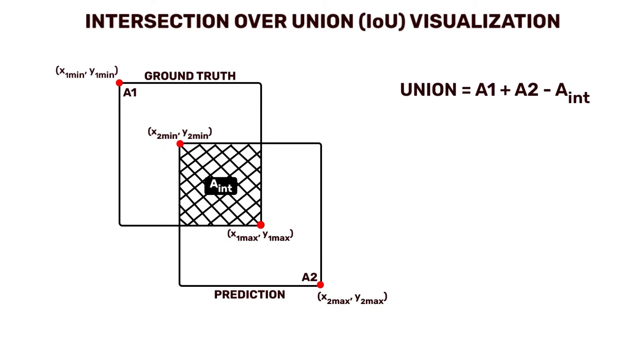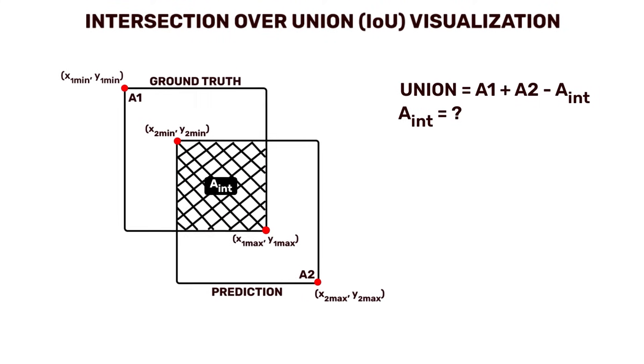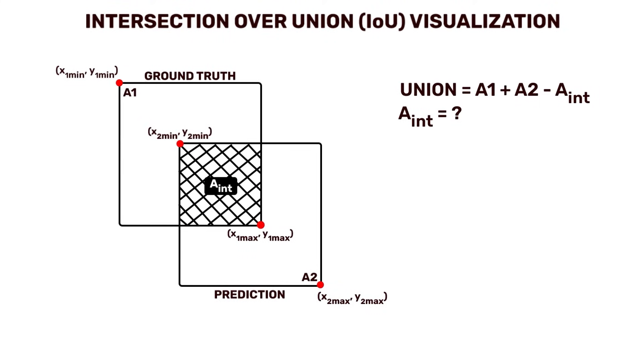The basic idea here is to compute area of intersection. We do know that both the bounding boxes are overlapping. The top left corner of the bounding box is represented by Xmin and Ymin, whereas the bottom right corner is represented by Xmax and Ymax.